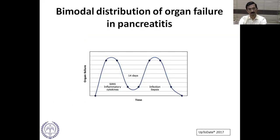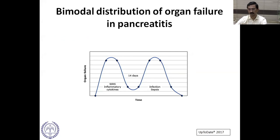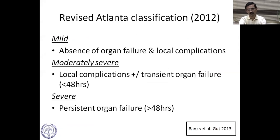The natural history of acute pancreatitis has two phases. The early phase is characterized by SIRS with inflammatory cytokines that can cause organ failure. After two weeks, there's another chance for organ failure when infection of the necrotic material leads to sepsis. The revised Atlanta classification categorizes pancreatitis as mild, moderately severe, and severe.